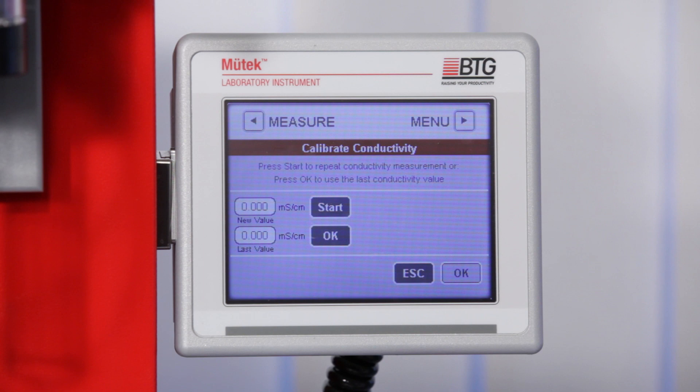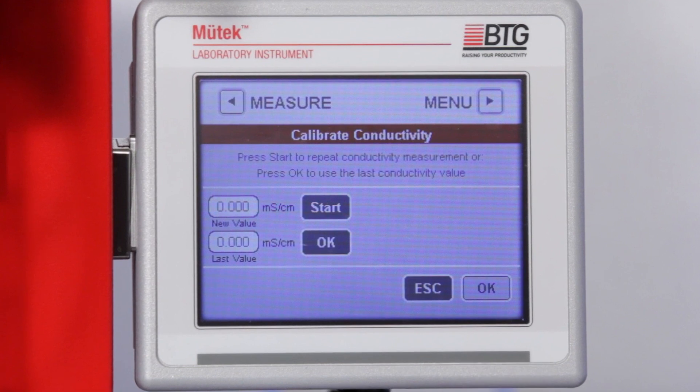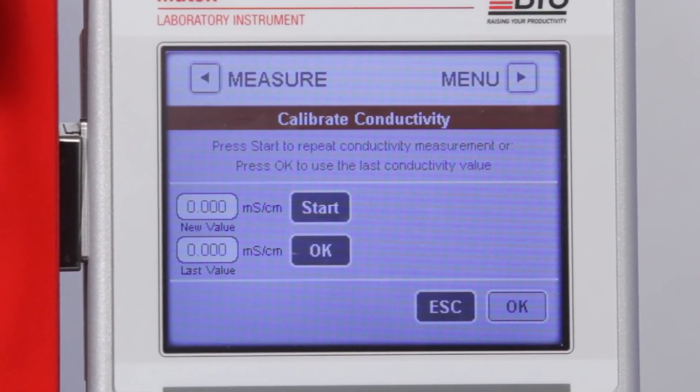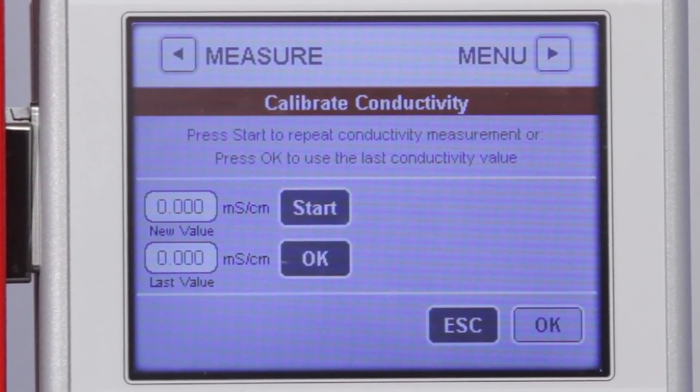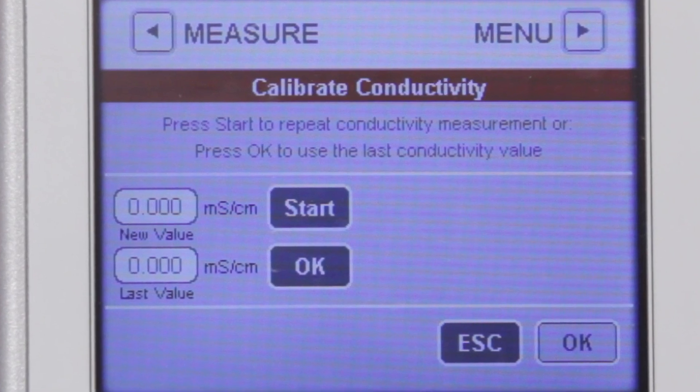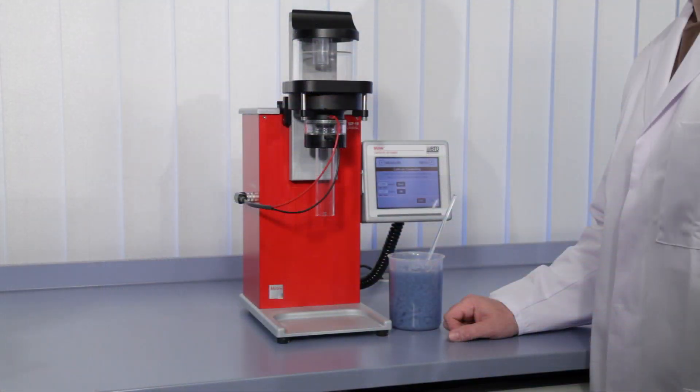Whenever the SZP's conductivity reading differs from an external reference value, the EL factor can be recalibrated to compensate the offset. This is done as follows.